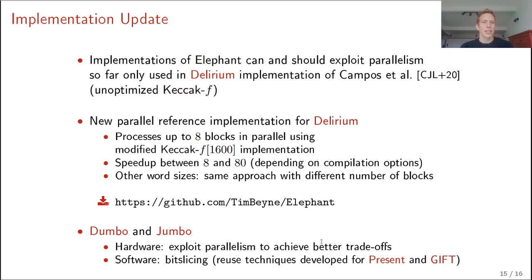A couple of notes on the implementations. So implementations of Elephant, they can and they in fact should exploit parallelism. So far, this was only done by a Delirium implementation recently made by Campos et al. Currently, we're working on new parallel reference implementations for Delirium where we use the Keccak-f, an alteration of the Keccak-f[1600] implementation to process up to eight blocks in parallel. This gives quite some speed ups, but I would like to mention that this is still a work in progress. More information can be found in the GitHub account of Tim Beine. For Dumbo and Jumbo, I would like to mention, particularly for software implementation, that it might be interesting to investigate how we can improve the implementations with the bit slicing techniques that have recently been developed for PRESENT and GIFT.